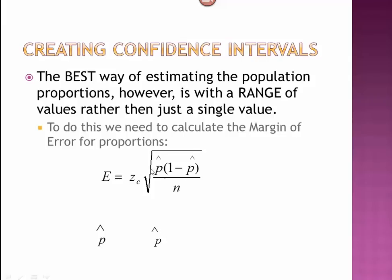Then we multiply that by the square root of my sample proportion times 1 minus the sample proportion. The proportion should be a number between 0 and 1, so 1 minus p-hat is simply its complement. We divide that by n, and then we take the square root of the whole thing.